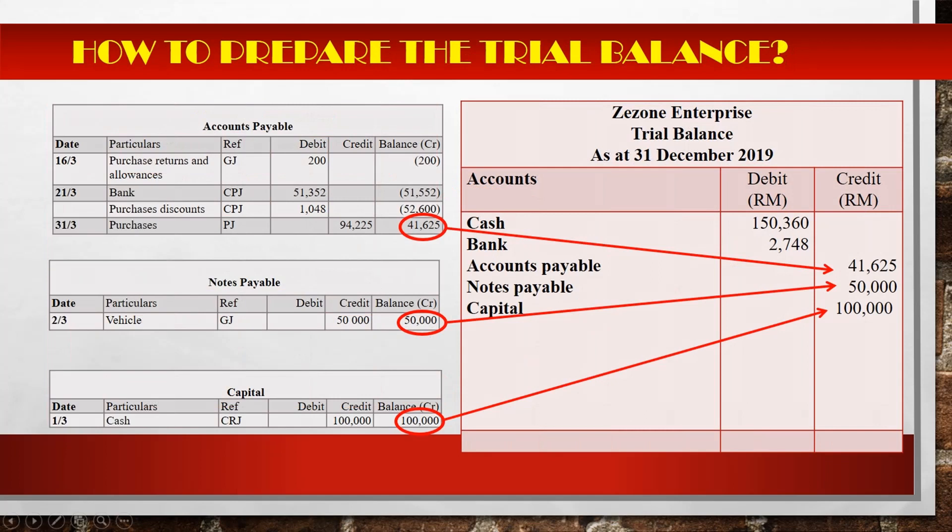Next, how to transfer liabilities and owner's equity account balance to the trial balance. Look at accounts payable, notes payable account, and capital account. Their balance is at the credit side, so you must transfer the balance amount to the credit side in trial balance, as shown in this picture.